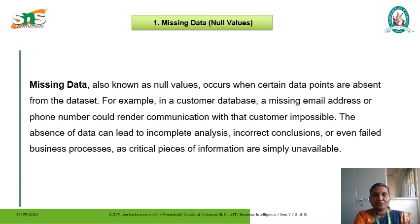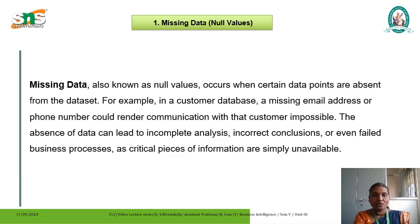The first type of error in data profiling is called missing data. As the name indicates, it may have some null values. This problem occurs when certain data points are absent from the data set. For example, in a customer database, a missing email address or phone number can render communication with that customer impossible. The absence of data can lead to incomplete analysis, incorrect conclusions or even failed business processes as critical pieces of information are simply unavailable. When you miss certain data, it is impossible to get the complete information.